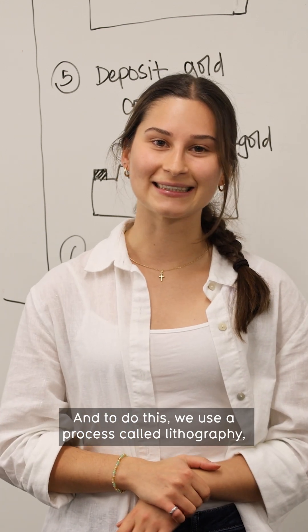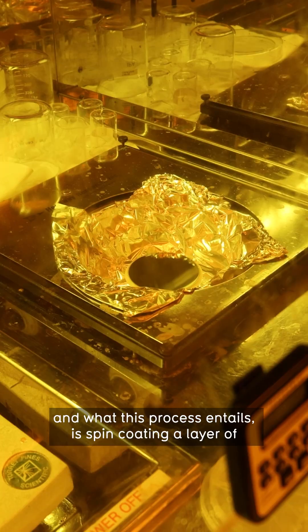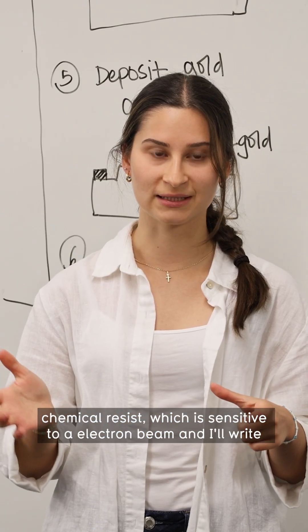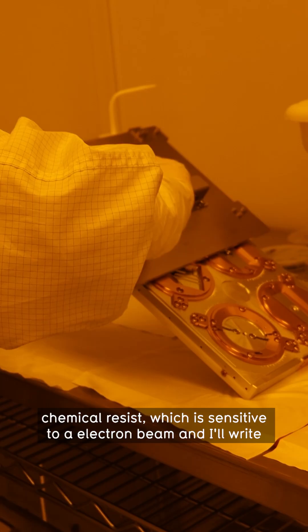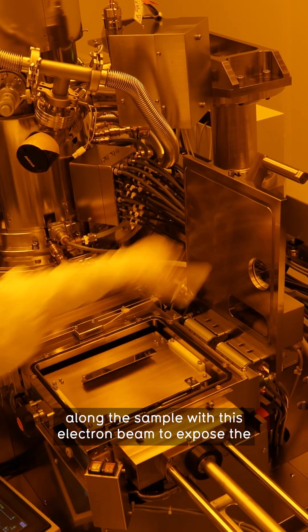And to do this we use a process called lithography, and what this process entails is spin coating a layer of chemical resist which is sensitive to an electron beam and I'll write along the sample with this electron beam to expose the chemical resist.